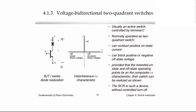With positive voltage across the switching network, we can block this voltage by turning off the transistor, which then operates in the normal fashion to block the voltage. In this case the diode will be forward biased, but still no current will flow because the transistor will block it.